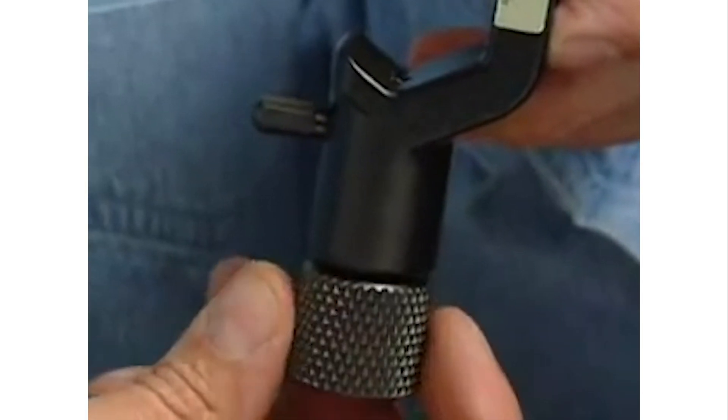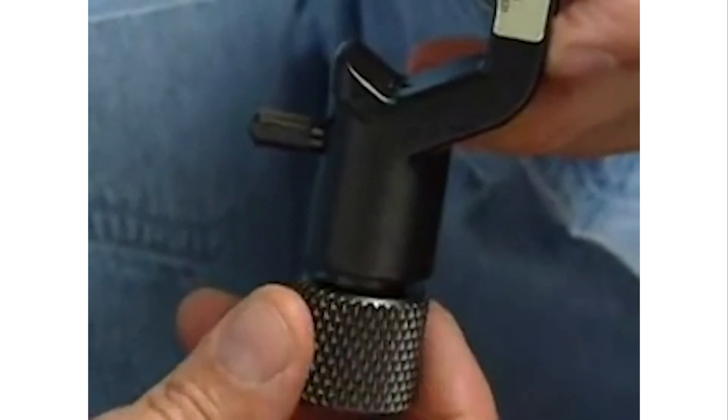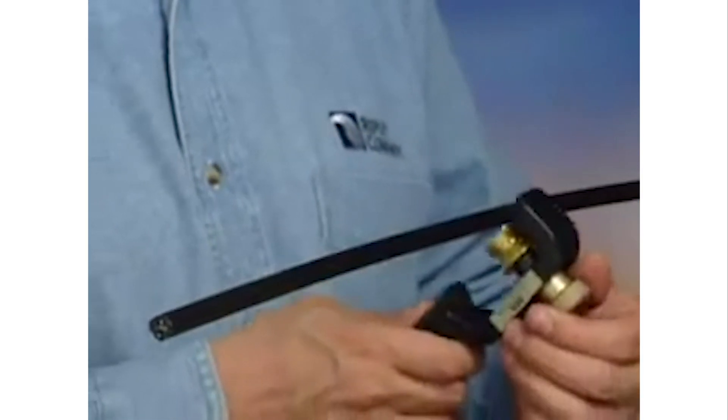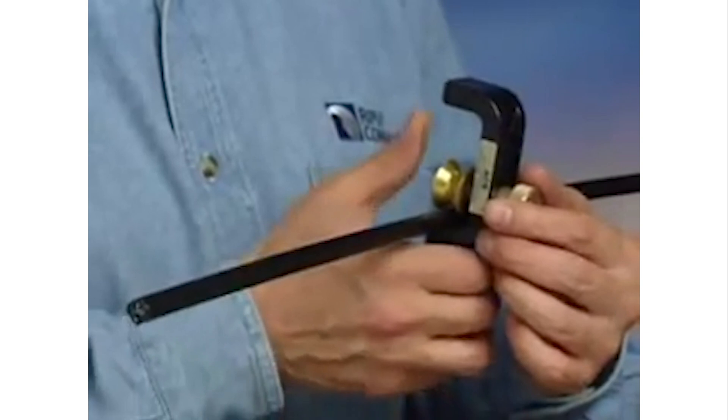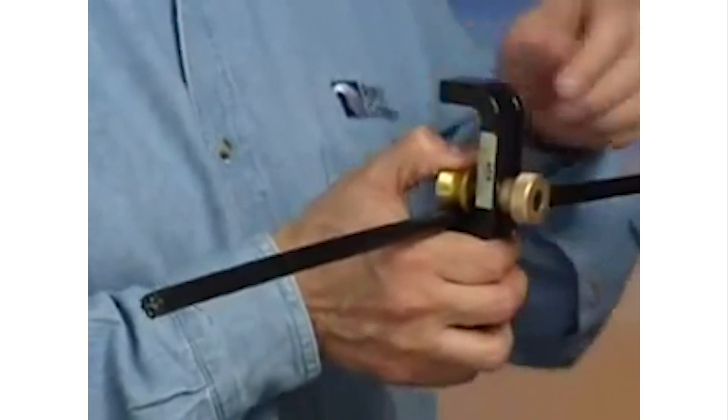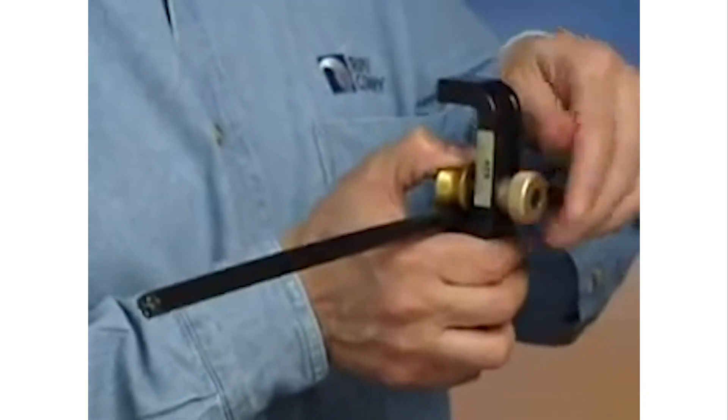Once the depth has been set, retract the blade with the black knurled knob. Slide the cable into the tool. Holding back the wheel against the cable with your thumb, tighten the knob to secure the wheel.